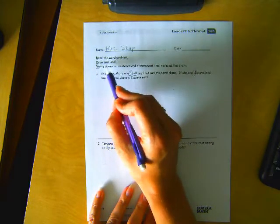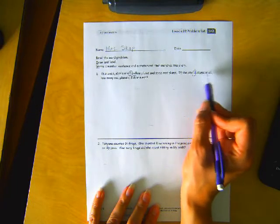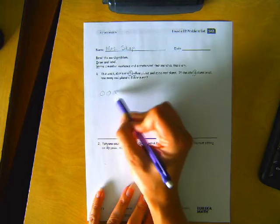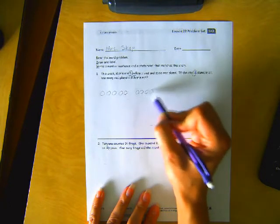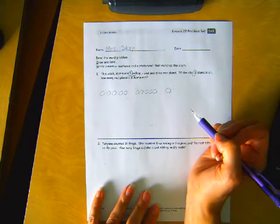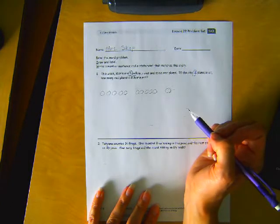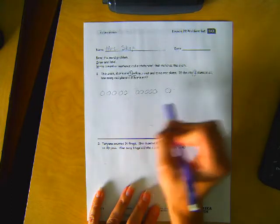Now we need to draw and label. So, she ate 11 plums in all. That's a big hint. There's 11 plums in all. There's my 11 plums.